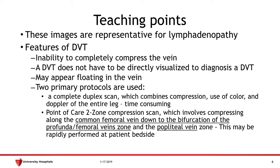In order to diagnose a DVT, there are two primary protocols. The first is a complete duplex scan, which combines compression with the use of color and Doppler flow of the entire leg — this is a time-consuming study for a busy emergency department. The other protocol is a point-of-care two-point compression scan, involving scanning the common femoral vein and the popliteal vein zones, which can be rapidly performed at the patient's bedside. It should be noted that the two-point compression scan is only indicated for low-risk DVT patients and is not appropriate for immobilized or ICU patients with a higher risk of thrombus formation.